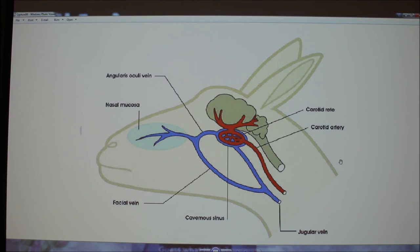Venous blood from the nasal mucosa drains into the cavernous sinus via the angular oculi vein, then it passes through to the carotid vein. From the other angle, the carotid artery carries hot blood from the heart and branches through the carotid loop. The heat is transferred from the hot blood to the cool blood to ensure proper blood temperature before reaching the brain. The blood then cools off the hypothalamus, which creates a difference between the body and brain temperatures and decreases the amount of water lost.